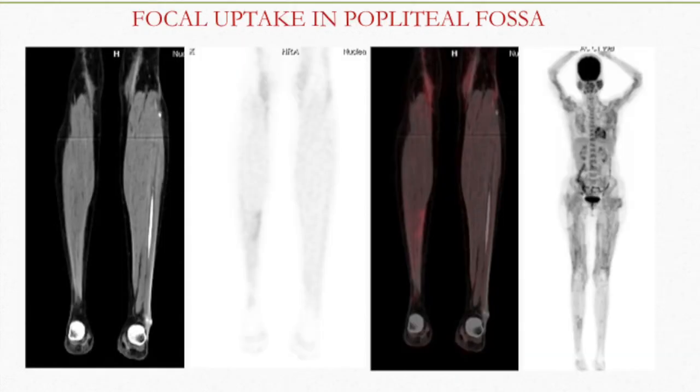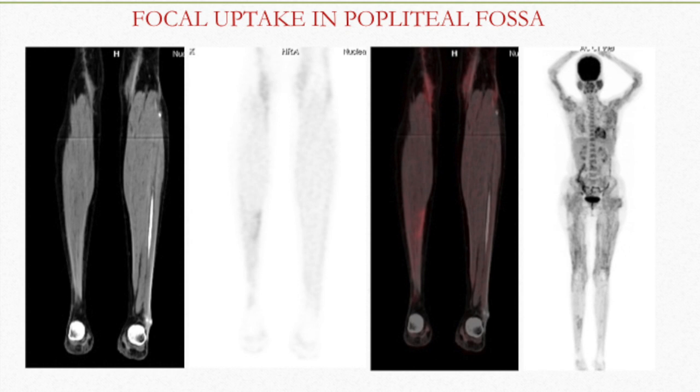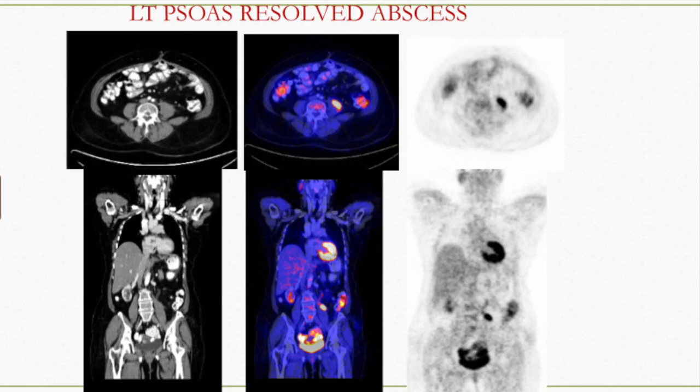There is a focal area in the popliteal fossa showing some inflammation. There are also cases of diffuse myositis bilaterally with increased uptake on the contralateral side that is asymmetric. Another case of parotitis on the left side shows uptake compared to the right side, consistent with parotitis. There is also a case of left psoas abscess tuberculosis — the psoas muscles are asymmetrical, with the left being bulky and showing a focal area of uptake consistent with psoas abscess tuberculosis.